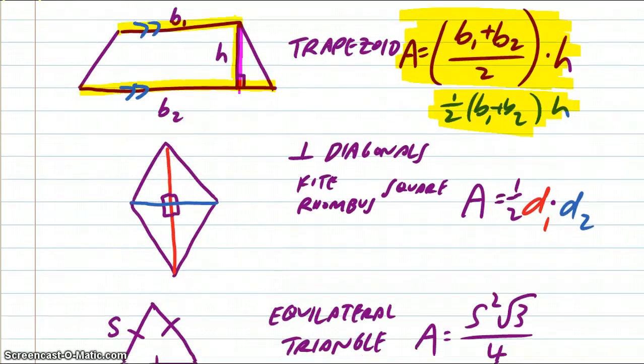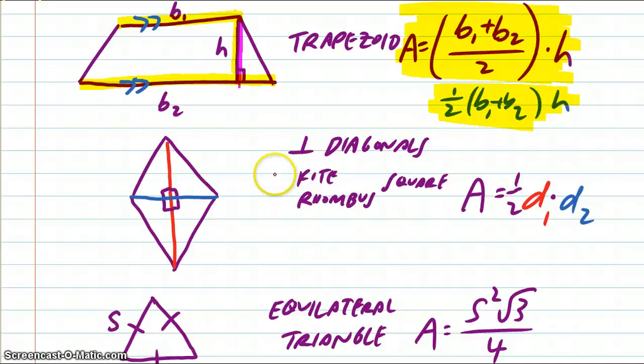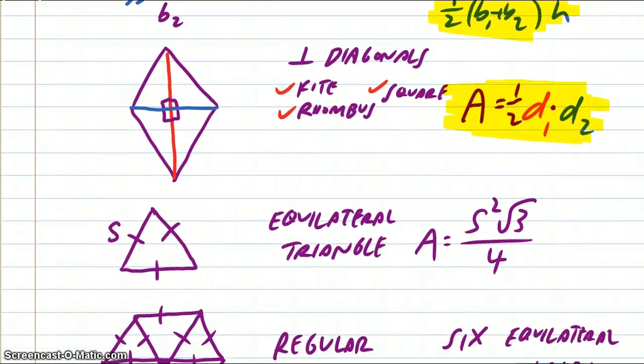We move on to a figure that has perpendicular diagonals. So we're talking about examples like a kite or a rhombus or a square that have perpendicular diagonals. Basically, you take the diagonals, and you multiply them, and then you divide by two, or multiply by a half. Equilateral triangle, you take a side. All the sides are the same size. So S stands for side. This is the letter S, not a five. So that S is the side of the equilateral triangle squared times the square root of three over four.